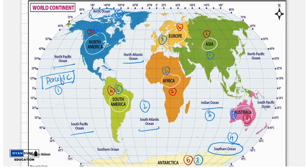Now let's see where the oceans are located in between which continents. Because the map is a 2D representation, the Pacific appears on both sides. The Pacific is located between Asia, Australia, North America, and South America — it is the largest ocean.